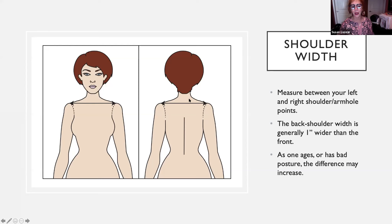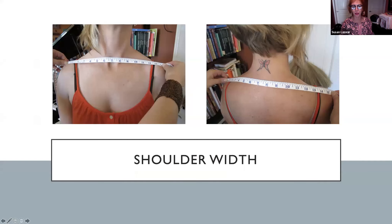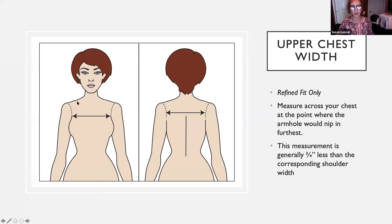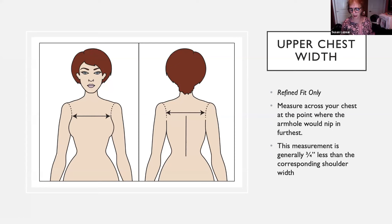The back neckline is wider than the front, and as women age or with poor posture, the back could be two inches bigger than the front — being aware of that helps you fix your clothes. You may want to take your upper chest width, but I've always found this is a hard one for people to take. It's where that crease is where your sleeve would be at its narrowest and measuring across. As a general rule, if my shoulder width is 15 inches, I would expect the upper chest to be three-quarters of an inch less, angling in three-eighths of an inch on each side. There's a play between the visual aesthetic and the reality — I just make it three-quarters of an inch different from my shoulders and get a nice armhole.